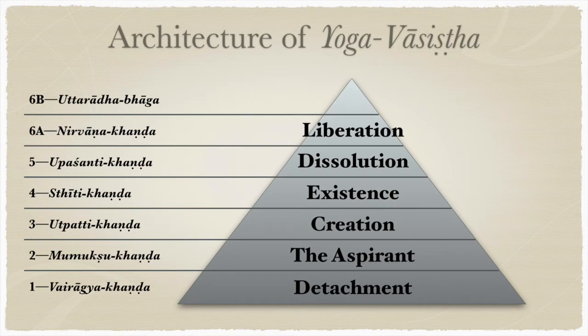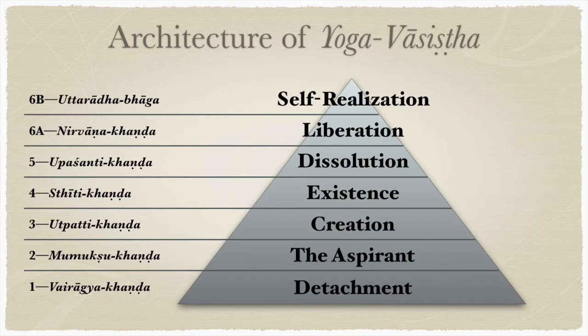Nirvana Khandha is about liberation and how it is attained. Finally, Uttaradha Bhaga — the second half of the sixth book, which is really the seventh — is about the ultimate goal of self-realization, which is beyond even liberation. The key point of the pyramid metaphor is that each subject is a prerequisite for the next. Unless you truly grasp the prior books, you cannot implement or realize the following ones.